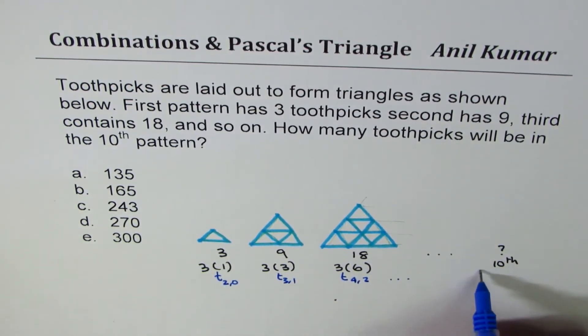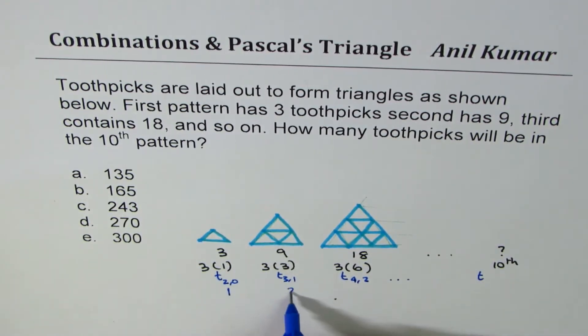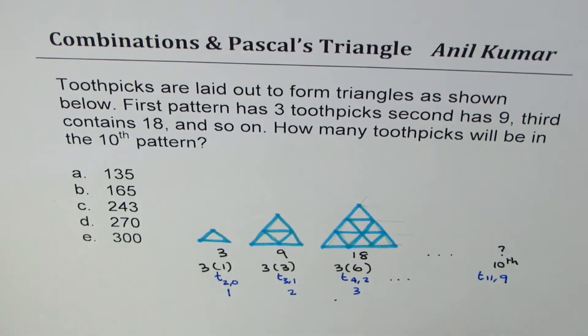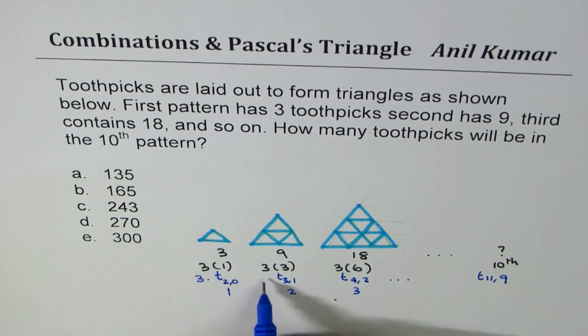So the 10th one should be where? So this is the first, second, and third. So for the 10th one, we have a number which is more than 3, and then less than 3. So it should be 11, 9. Do you see that? So that t(11,9) is the number of toothpicks, which you can find, right? Of course, 3 times, right? So we have to multiply 3 times all these numbers. So that is how we can get the solution.